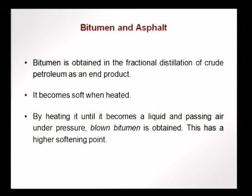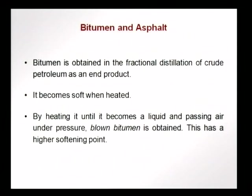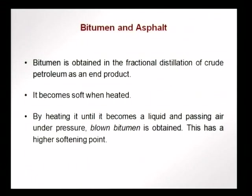Bitumen is obtained from petroleum through fractional distillation of crude petroleum and is one of the end products. A major property of bitumen is that it becomes soft when heated. This makes it possible for pavements and other applications to heat the bitumen, apply it, and let it reach the ambient temperature and become harder in that process. This is one key reason why bitumen is used in so many applications.